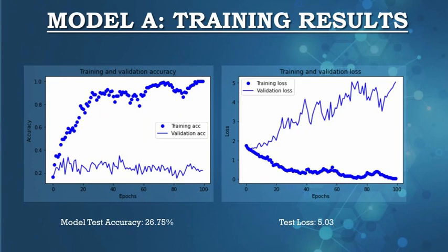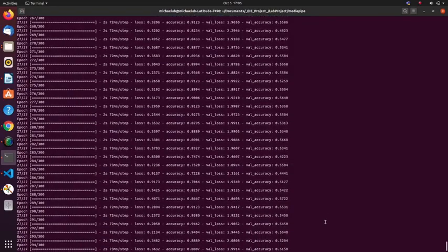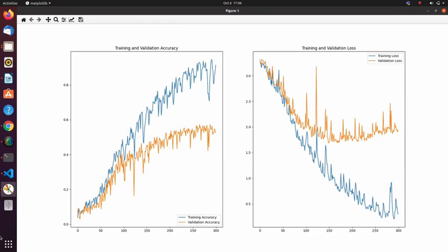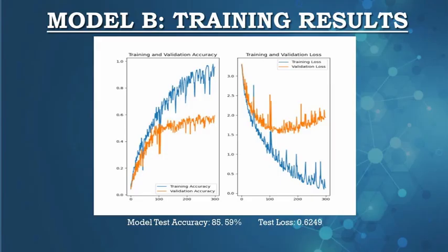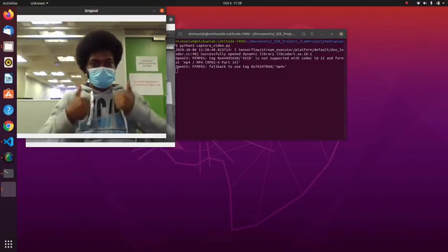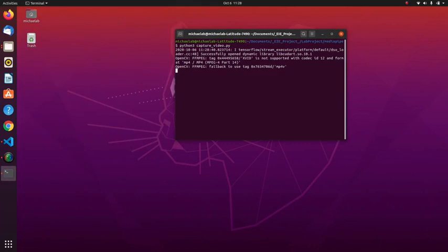Model A gave an accuracy of approximately 26% after training. We then trained Model B. After training Model B with the South African Sign Language alphabet, we obtained an accuracy rate of 85.59%. And here's a demonstration of our South African Sign Language recognition tool.